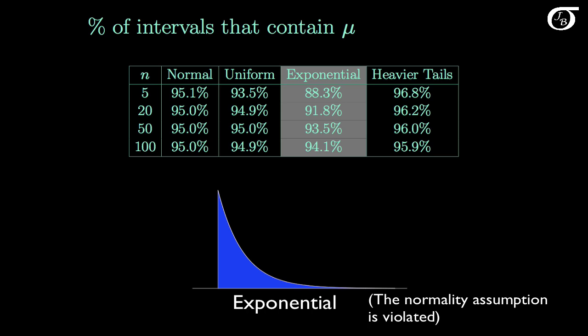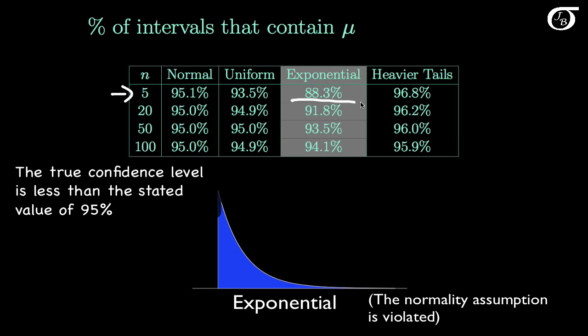Here we're sampling from the exponential distribution, so the normality assumption is violated. This distribution has some right skewness, and we can expect the t-procedure to perform worse here. For sample sizes of 5, we're stating a 95% confidence level, but the true confidence level is quite a bit less — estimated to be around 88.3% in this simulation. As the sample size increases, the confidence level gets closer and closer to 95%, but note there's nothing magical about the number 30, 40, 50, or 100. Even at 100, our confidence level is a little bit less than the stated 95%.